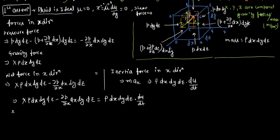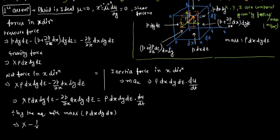Dividing the whole equation by mass (ρ·dx·dy·dz), we get: X − (1/ρ)·(∂p/∂x) = du/dt. This is our first equation — the force balance in the x-direction per unit mass.